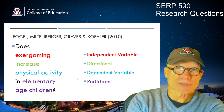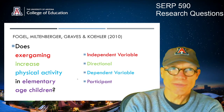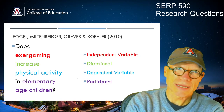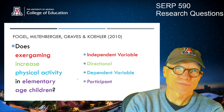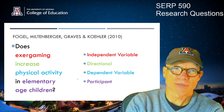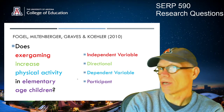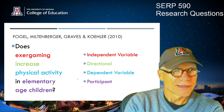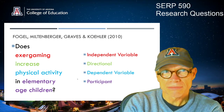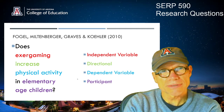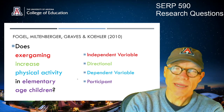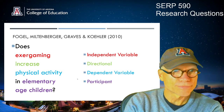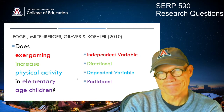Now let's look at another study. This is Fogel, Milton Berger, Graves, and Kohler, 2010. Their research question is: does exergaming increase physical activity in elementary age children? The independent variable is exergaming, the direction is increase, the dependent variable or human behavior is physical activity — which they would define more carefully in the study — and the participants are elementary age children. It's simple.